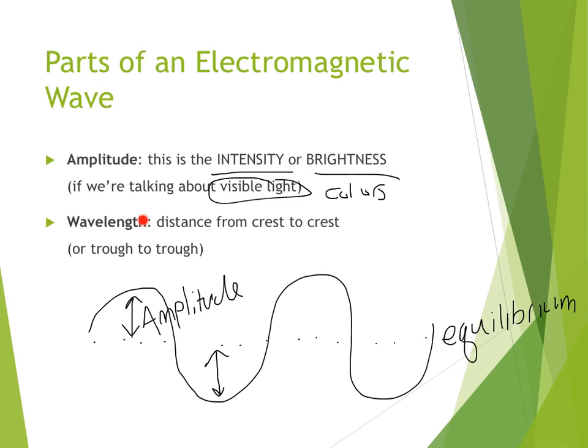Another one that's important is wavelength, which is just the distance from crest to crest. So we've been talking about all the different electromagnetic waves: radio, microwave, infrared, visible, ultraviolet light, X-rays and gamma rays.